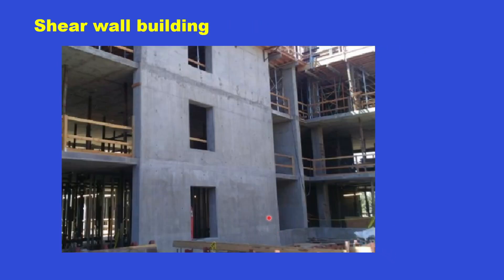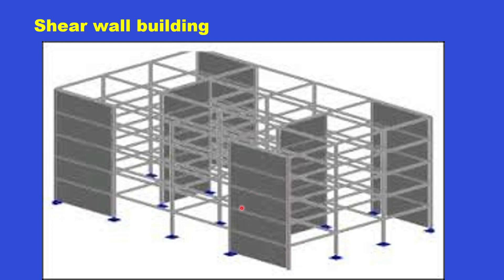Here is a practical example of a shear wall building. These vertical extending walls are shear walls, with some openings in the wall. The rest are columns and there can be beams, slabs, and other frame elements. In this schematic drawing, shear walls are shown by black planes in different orientations, along with the beams and column framework — the frame system.